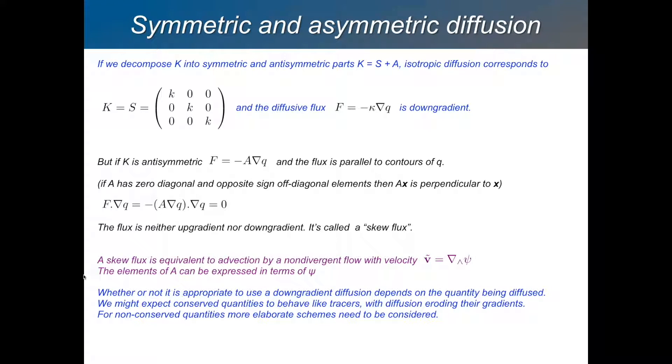And a skew flux, as I said, it can be written as an advection term. And you can assign an advecting velocity to that flux, which can be represented as a stream function, even. So the stream function represents this skew flux, which does not change the gradient. It goes along the gradient.